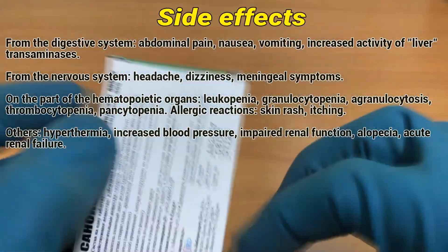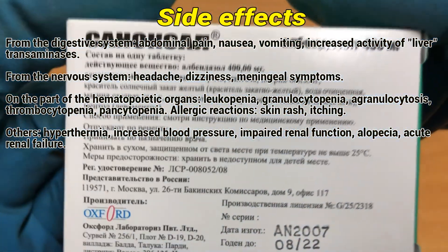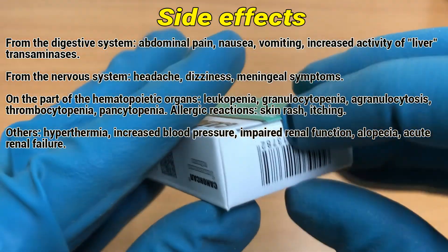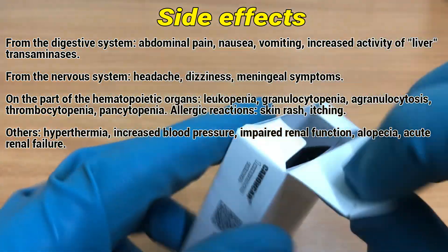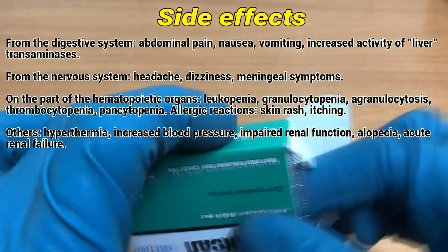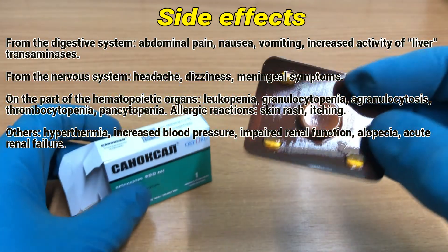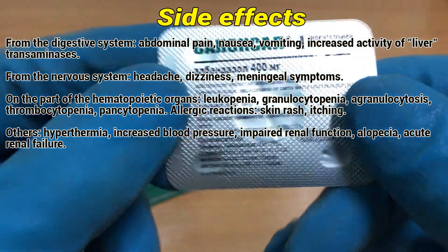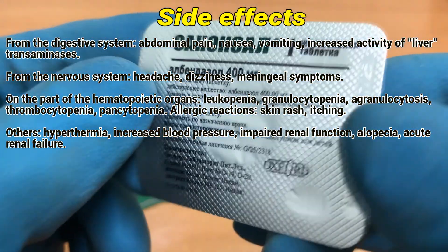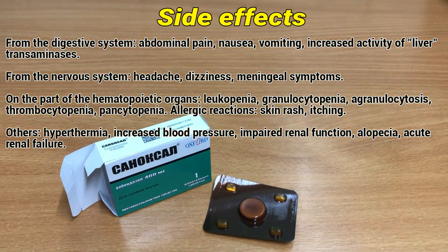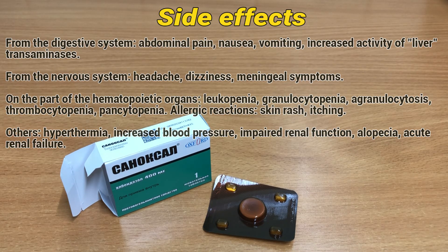Side effects: From the digestive system — abdominal pain, nausea, vomiting, increased activity of liver transaminases. From the nervous system — headache, dizziness, meningeal symptoms. On the part of the hematopoietic organs — leukopenia, granulocytopenia, agranulocytosis, thrombocytopenia, pancytopenia. Allergic reactions — skin rash, itching. Others — hyperthermia, increased blood pressure, impaired renal function, alopecia, renal failure.